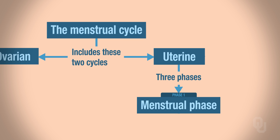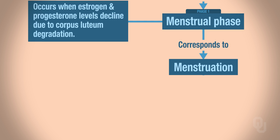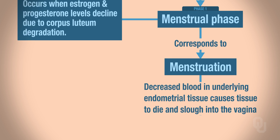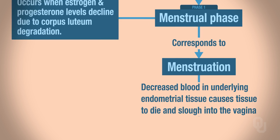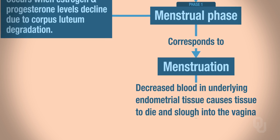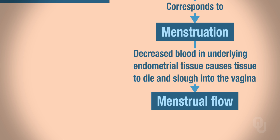The first phase of the uterine cycle is the menstrual phase. This occurs when your estrogen and progesterone levels are declining because the corpus luteum degenerated. Remember, there is no fertilization — no fertilization means the corpus luteum degenerates, therefore there's no production of estrogen or progesterone. During menstruation, there is decreased blood delivery to the endometrium, so the tissue dies and sloughs into the vagina. That's what causes menstrual flow.